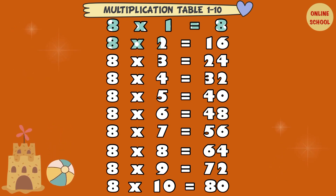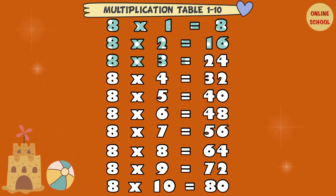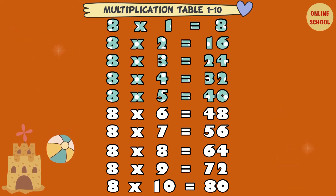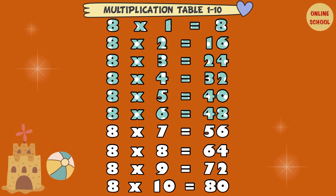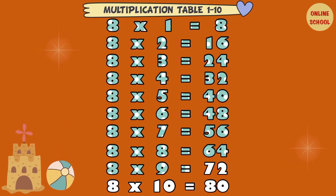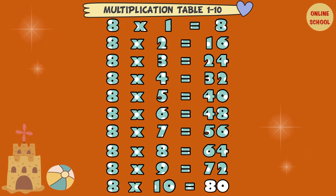8 x 1 equal 8. 8 x 2 equal 16. 8 x 3 equal 24. 8 x 4 equal 32. 8 x 5 equal 40. 8 x 6 equal 48. 8 x 7 equal 56. 8 x 8 equal 64. 8 x 9 equal 72. 8 x 10 equal 80.